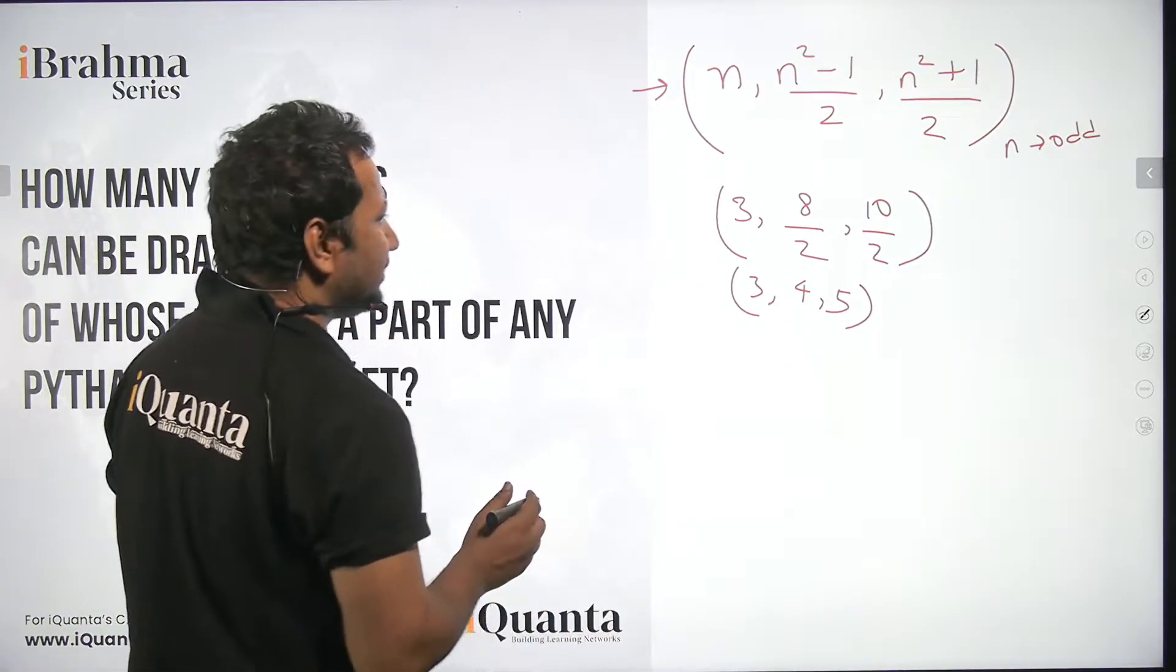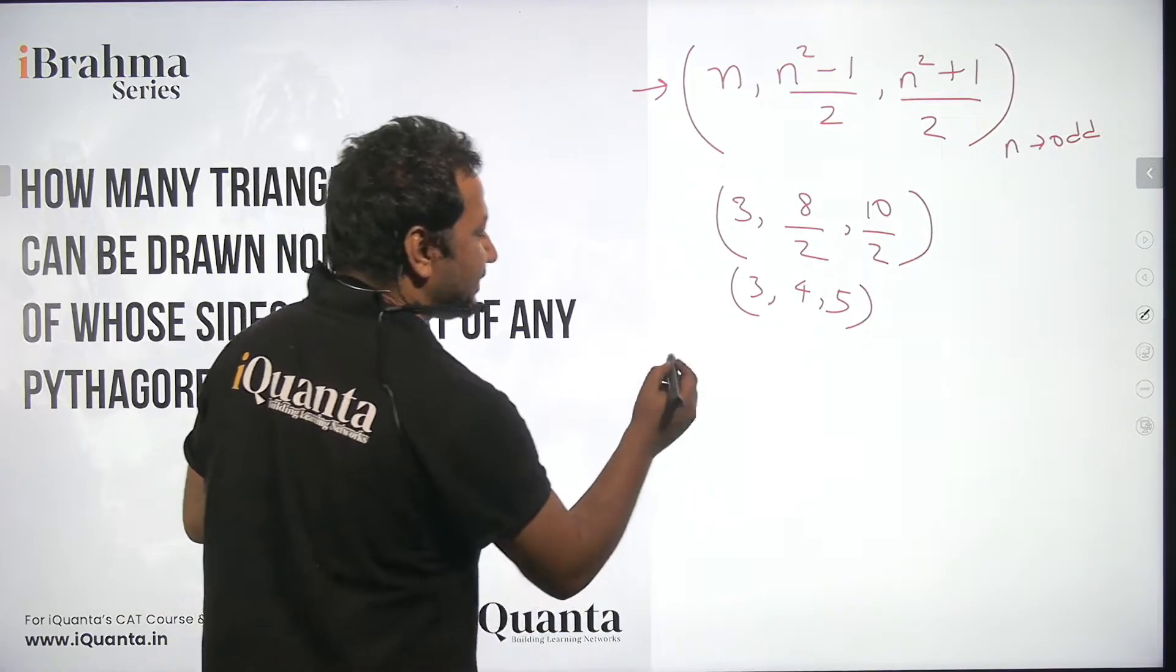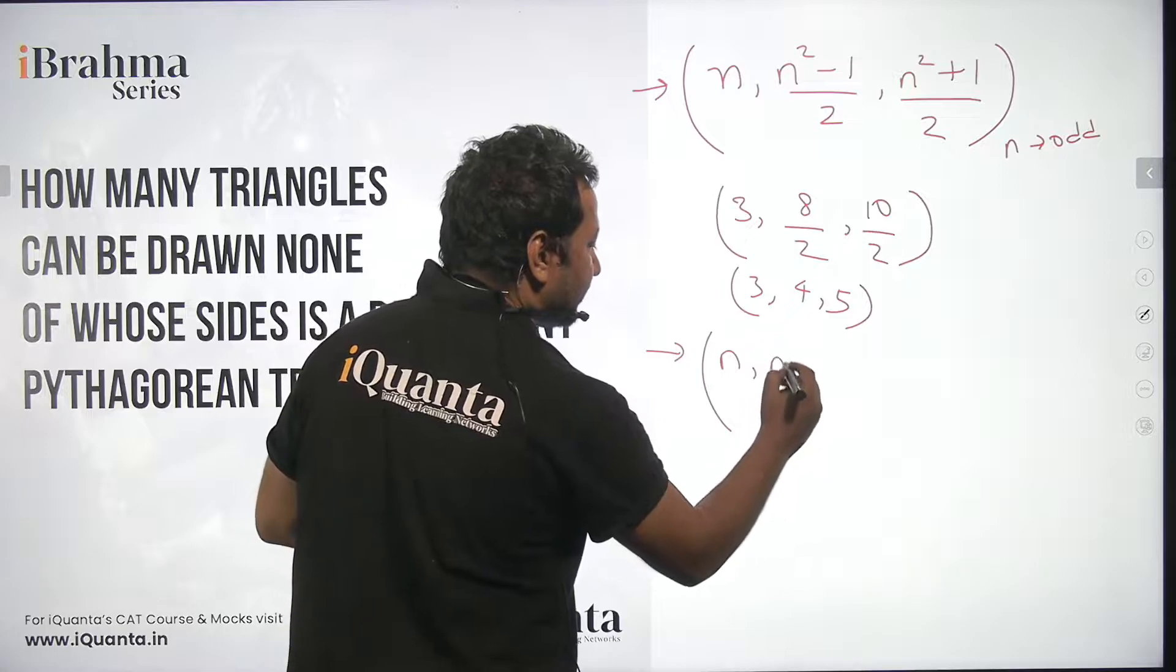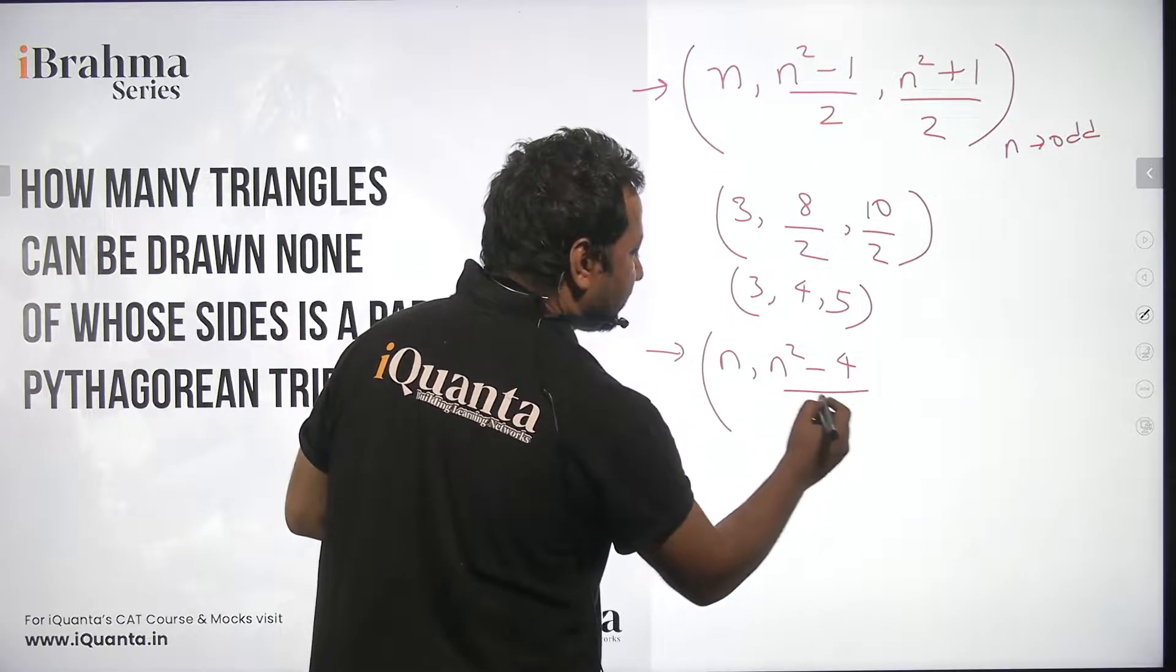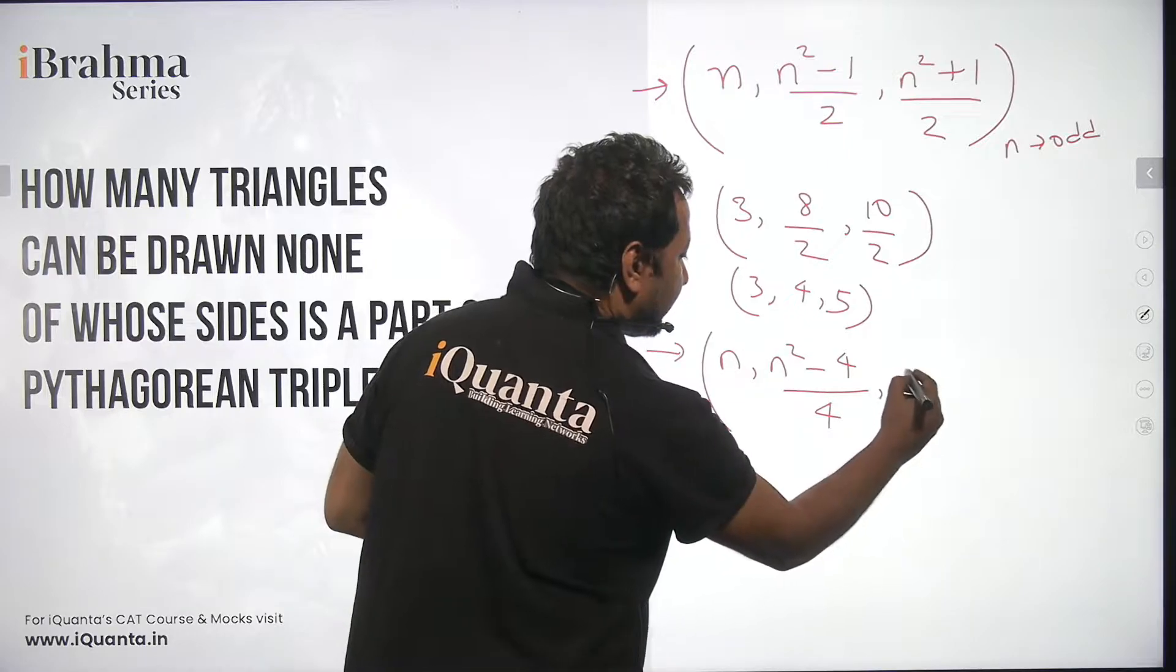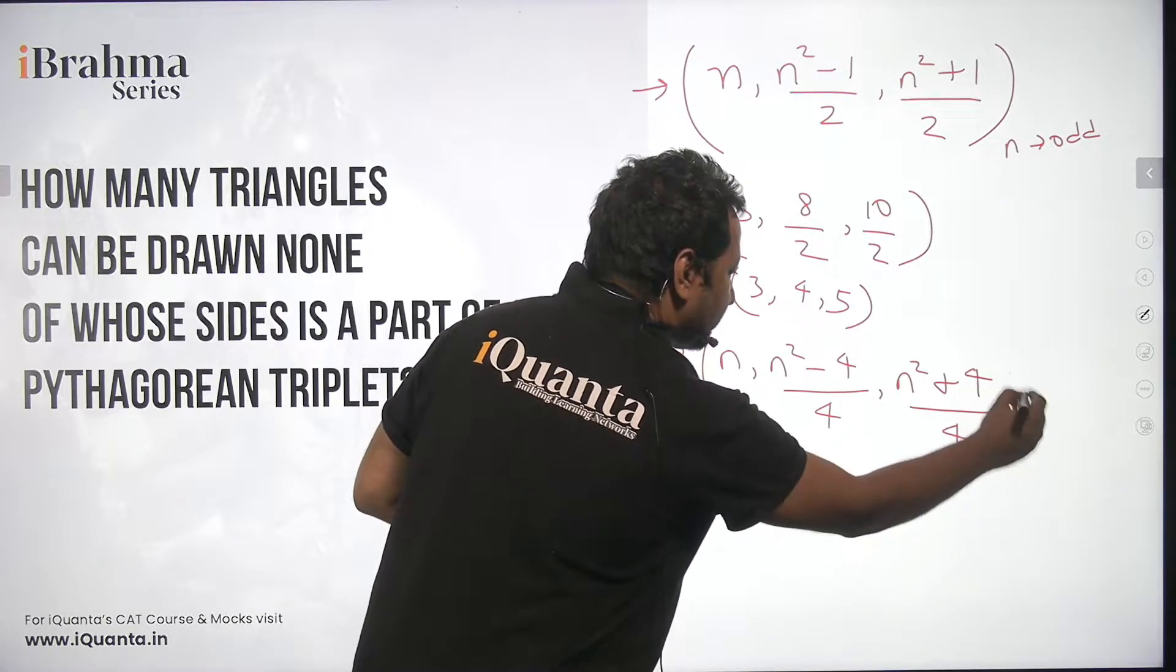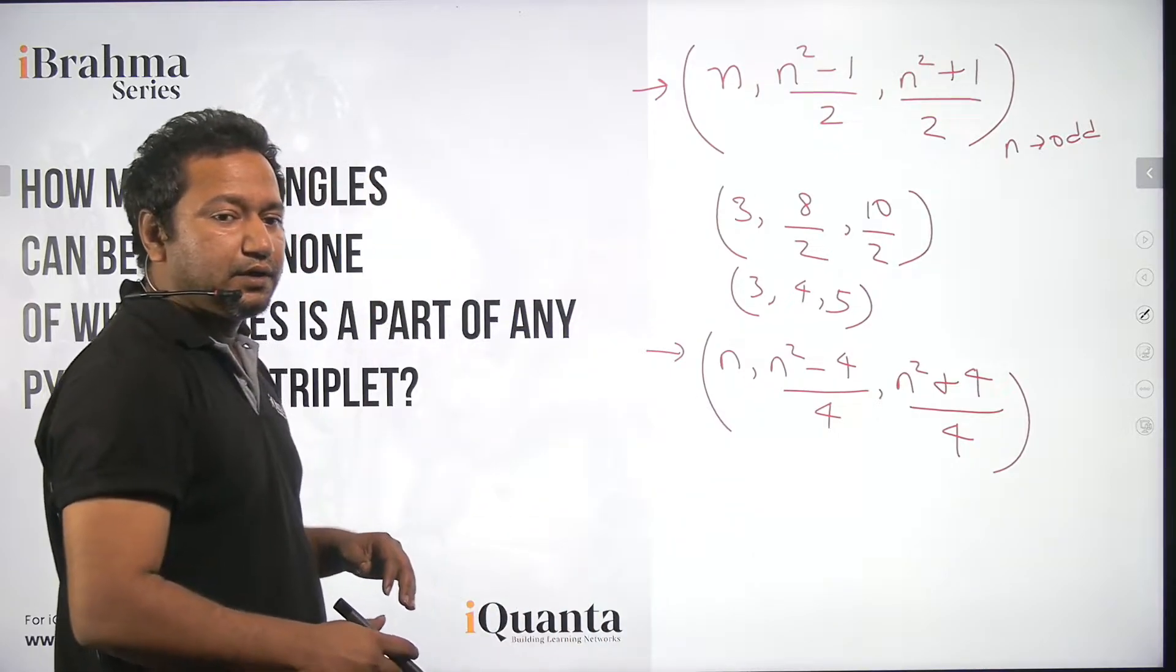Similarly, if n is even, in that case the triplet will be n, n square minus 4 whole upon 4, and n square plus 4 whole upon 4. So we learned this as well.